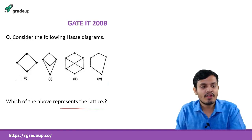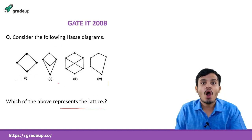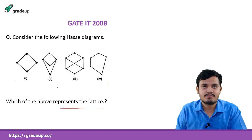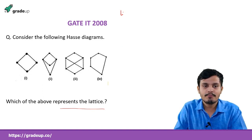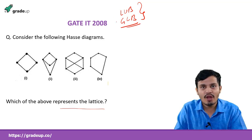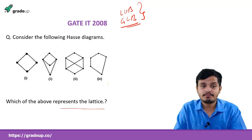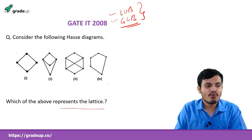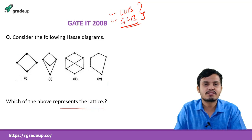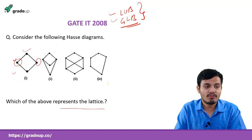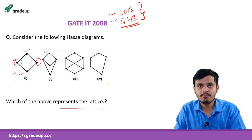What is a lattice? For every pair of elements, if there is a LUB (least upper bound) and GLB (greatest lower bound), then we can say it is a lattice. For the first diagram, this is a lattice we have seen many times. If I ask what is the least upper bound of two elements, it will be this, and the greatest lower bound will be this — and for any pair this is going to be satisfied.